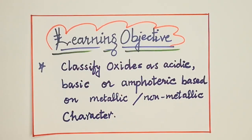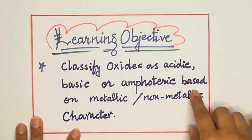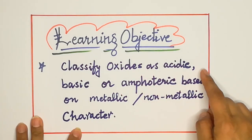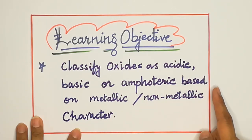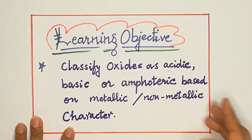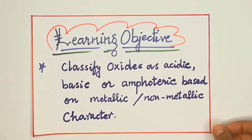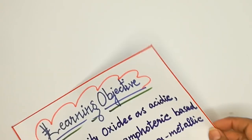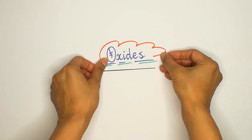Assalamu alaikum guys, today we are going to start a lesson on oxides. You will learn how to memorize this oxides chapter. Today you will be able to classify oxides as acidic, basic, and amphoteric oxides based on their metallic character. In this lesson we will describe the classification of oxides, so first of all we will define what oxides are.